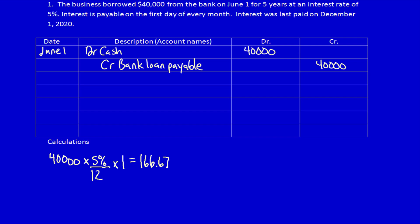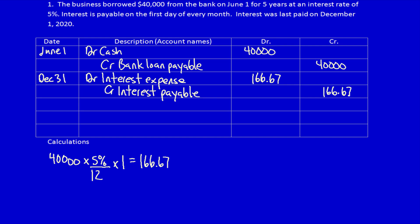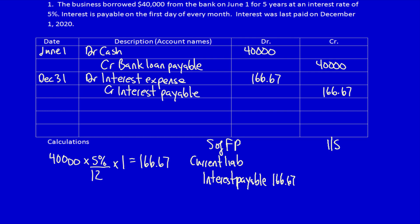We have to do the adjusting entry on December 31st. What did we get? We got to borrow somebody else's money — we got the use of somebody else's money to help generate revenue. That's an expense: interest expense, $166.67. Interest expense is basically rent for using somebody else's money. What did we give away? We gave away a promise to the bank to pay them in the future — interest payable, $166.67. This is an accrued expense adjusting entry, identified by the debit to the expense account. On the statement of financial position we report a current liability — interest payable $166.67. On the income statement we report a financing expense — interest expense $166.67.